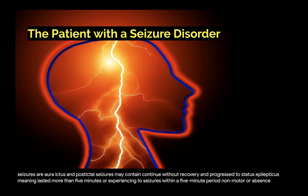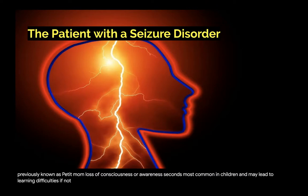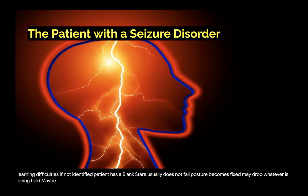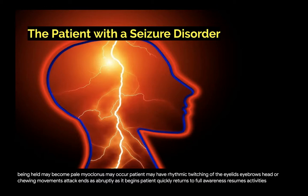Non-motor or absence seizures, previously known as petite mal, involve loss of consciousness beginning and ending abruptly at about five to thirty seconds. Most common in children, they may lead to learning difficulties if not identified. The patient has a blank stare, usually does not fall, posture becomes fixed, and may drop whatever is being held or become pale. Myoclonus may occur with rhythmic twitching of the eyelids, eyebrows, head, or chewing movements. The attack ends as abruptly as it begins, and the patient quickly returns to full awareness and resumes activities, unaware of what occurred.